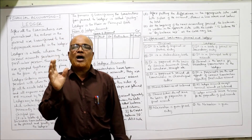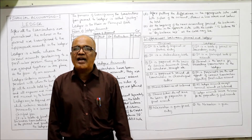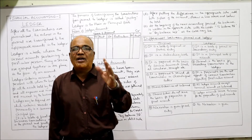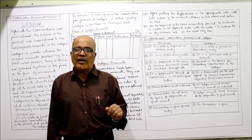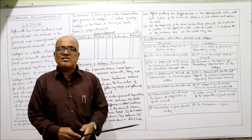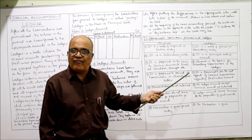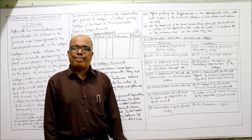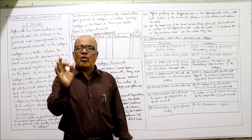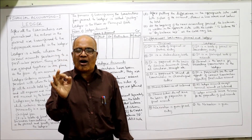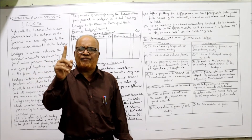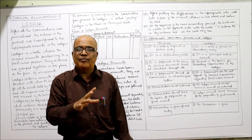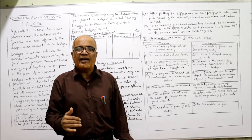Now a theory question may be asked in examinations regarding the differences between journal and ledger. Both are important books of accounts having their own advantages. The differences are explained in tabular form. First: journal is a book of original or prime entry, because the entry is first recorded in journal as soon as the transaction takes place.